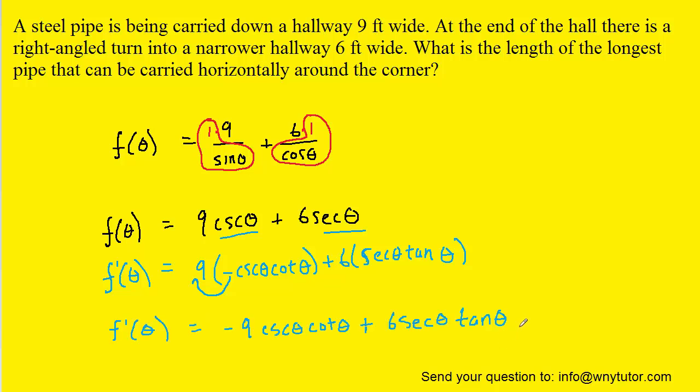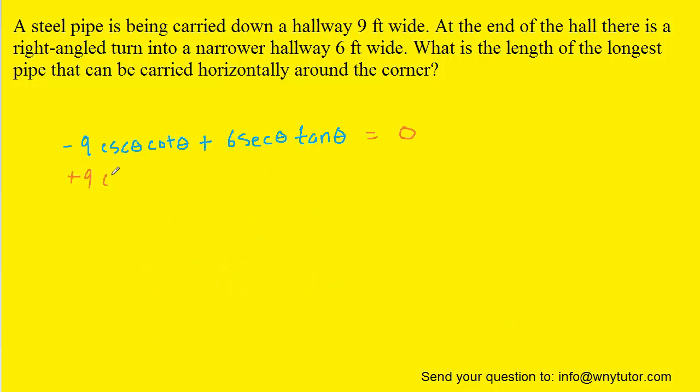And then, of course, our next step is to set the derivative equal to 0. We can add the 9 cosecant theta cotangent theta to both sides of the equation. That's going to shift it over to the right.